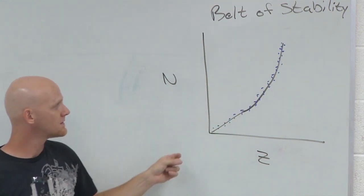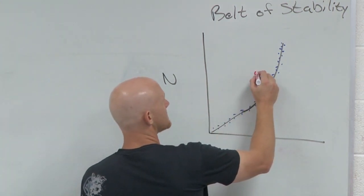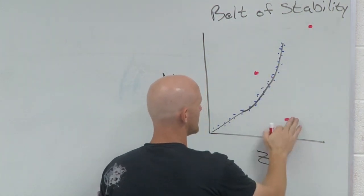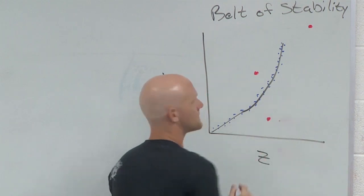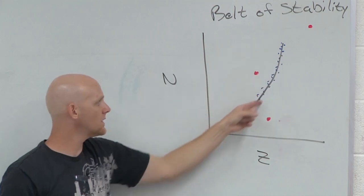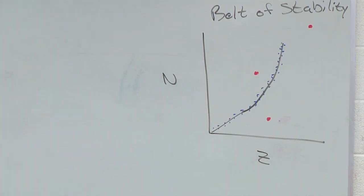These are the stable ones. And if you get outside this region by any significant degree, say you're out here, or out here, or maybe you're way up here for a heavy nucleus or something, you're probably radioactive and you're going to undergo a nuclear reaction in an attempt to get closer to this belt of stability. We'll see some examples of that.